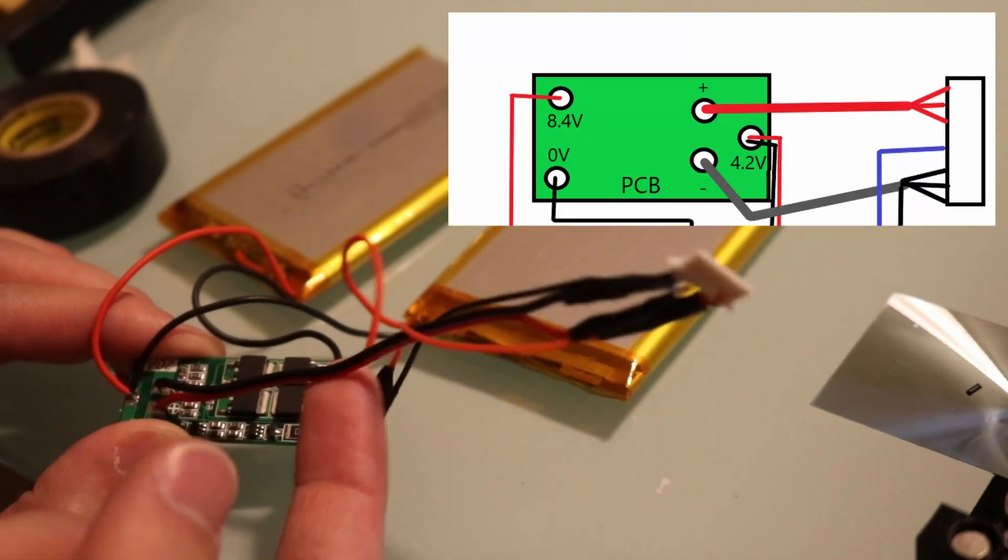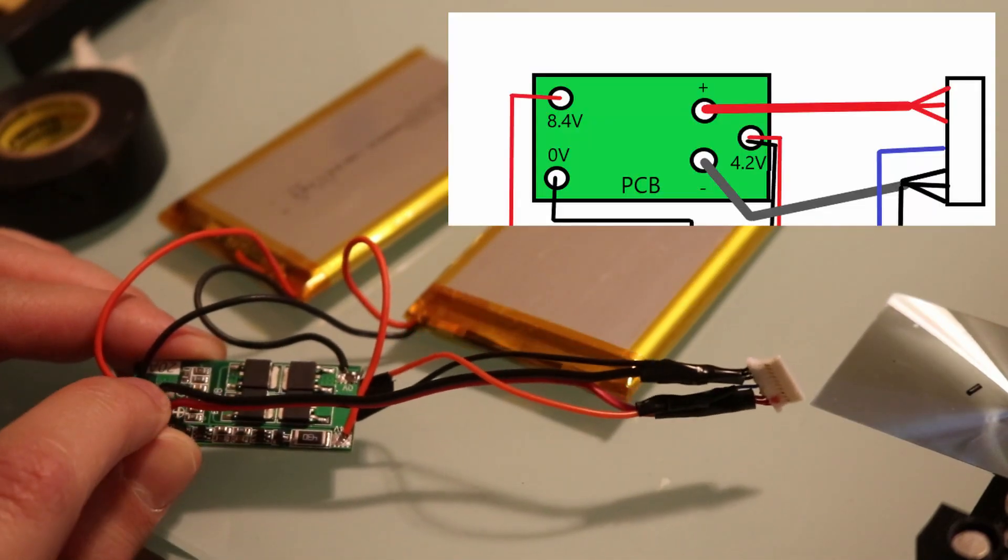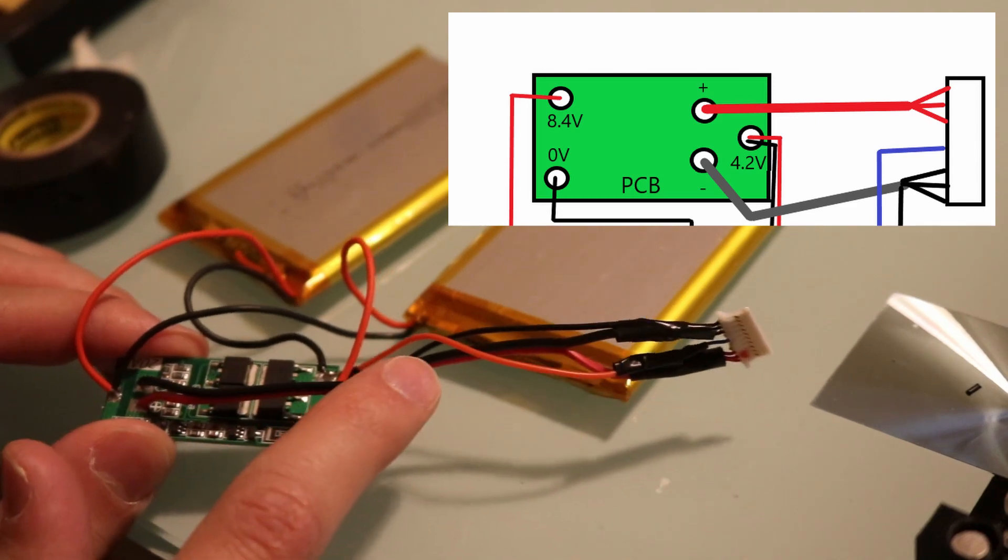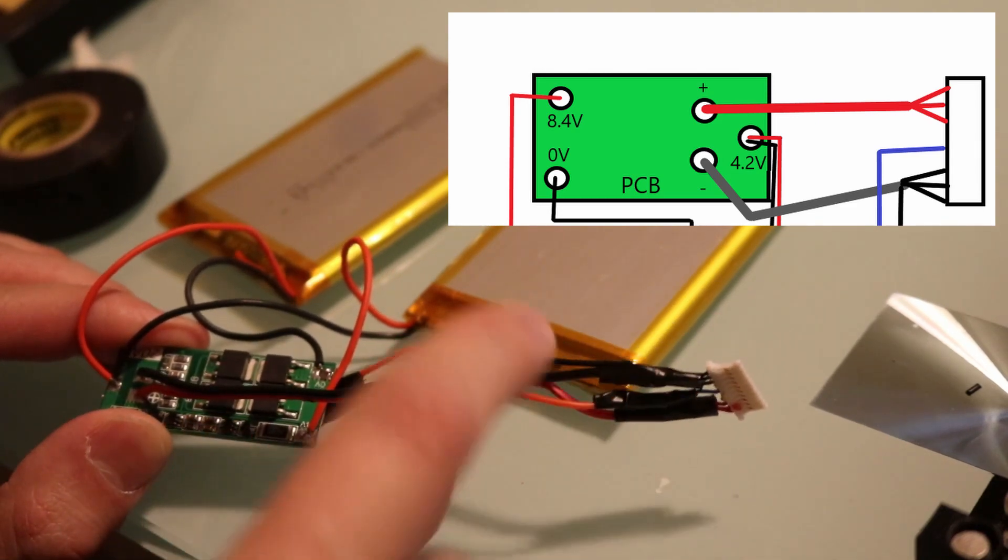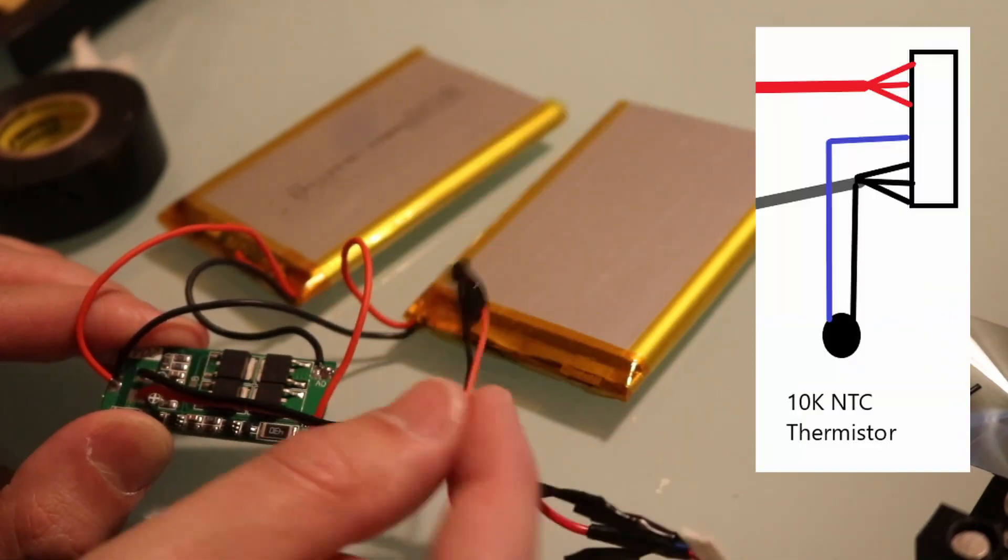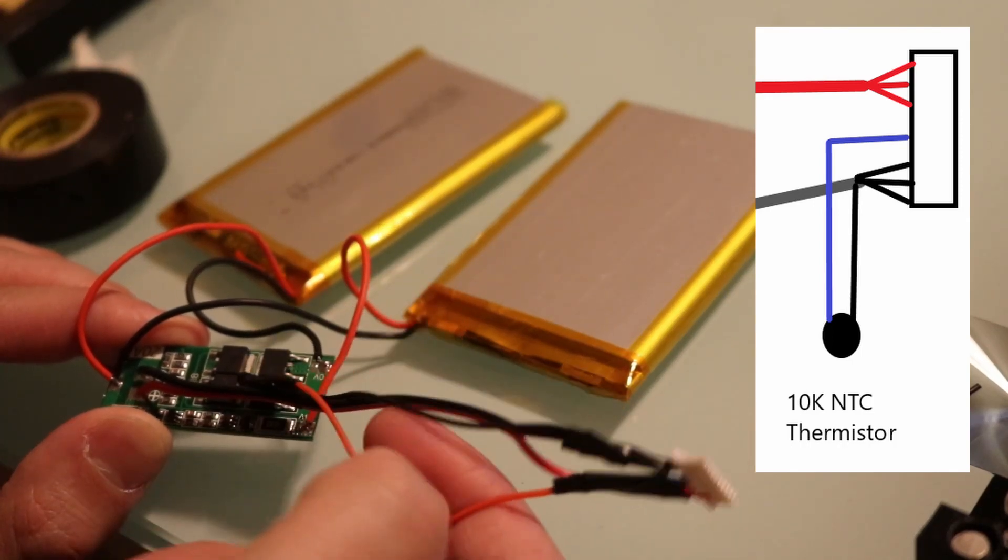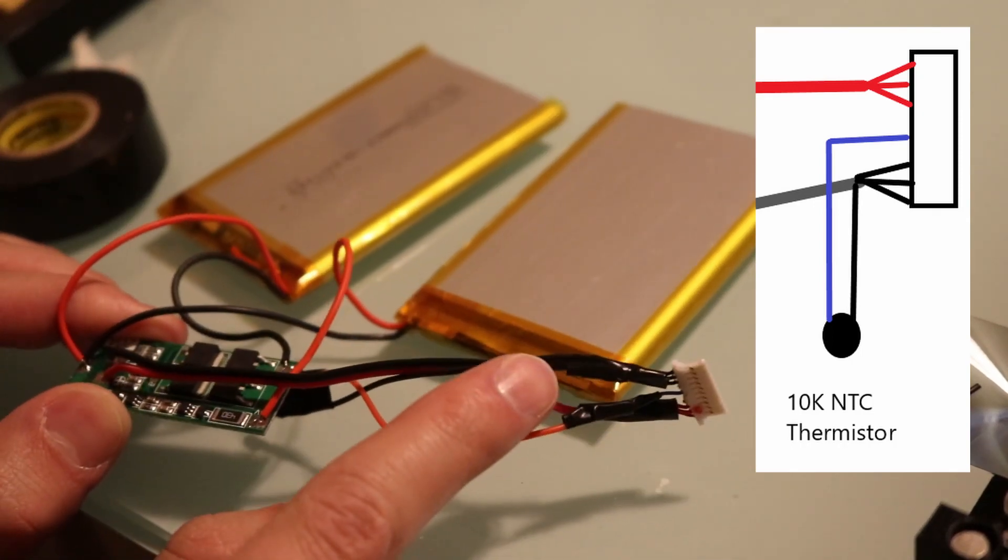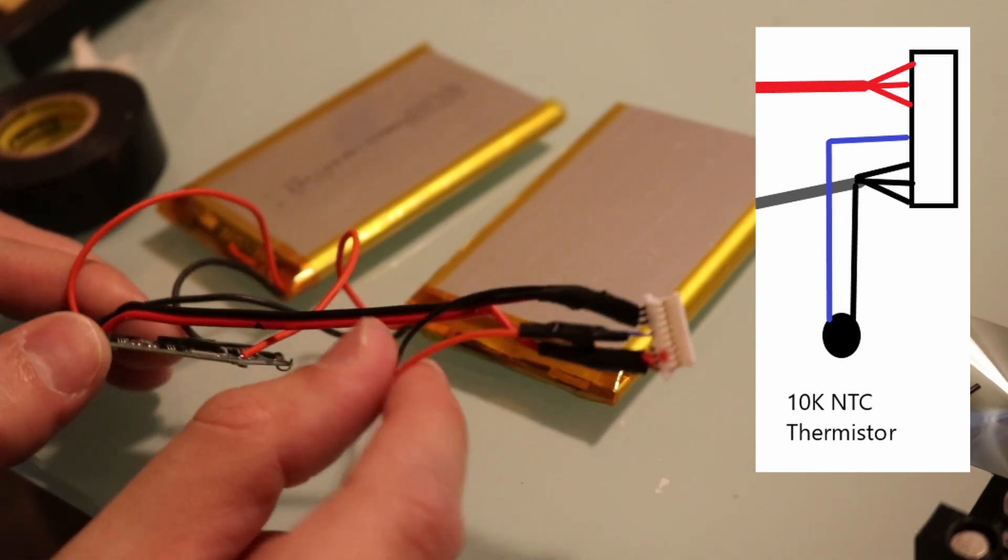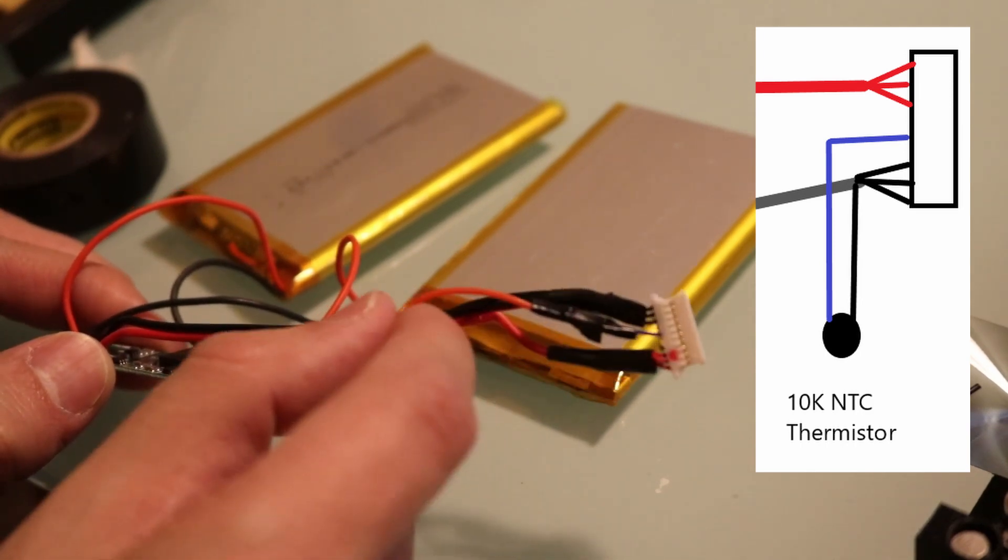I have the charging cables running from the positive and negative terminals here up to the connector. And lastly, I have the thermistor here which is tied to the neutral and it's tied to a middle sense line on the Latte Panda Alpha.